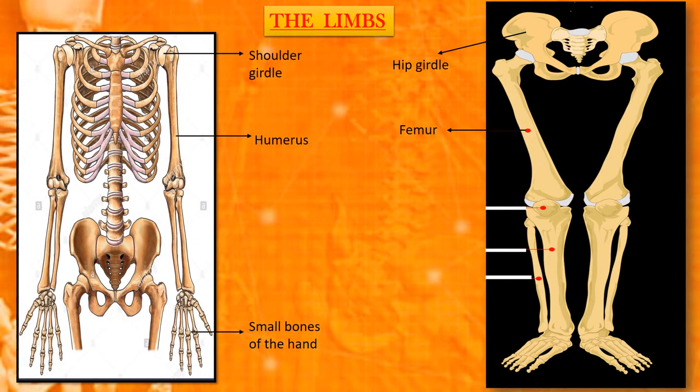There are two pairs of limbs: arms and legs. Limbs are made of long bones. Our arms are known as upper limbs and the legs are known as lower limbs. The upper arm and the lower arm together make the upper limbs. Humerus is the long bone in our upper arm.